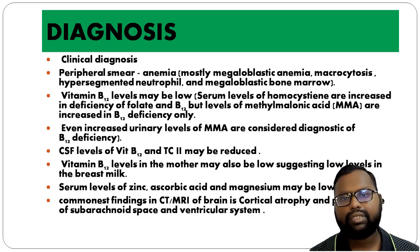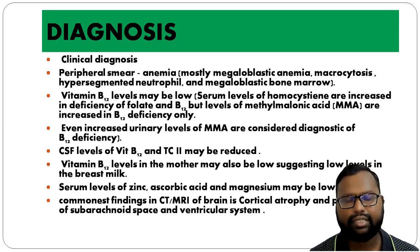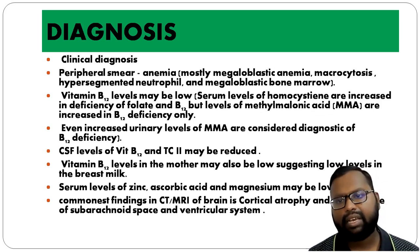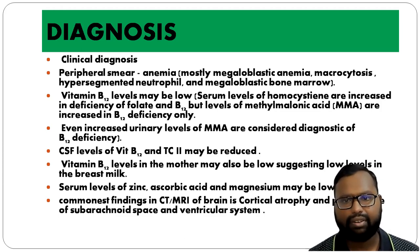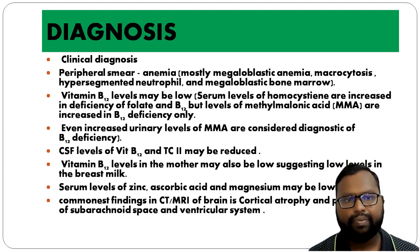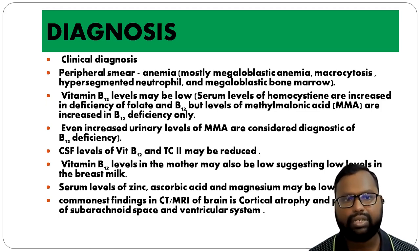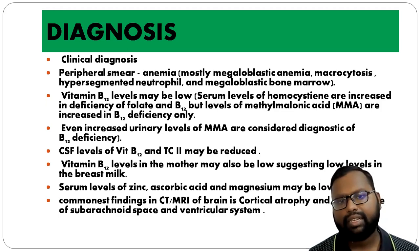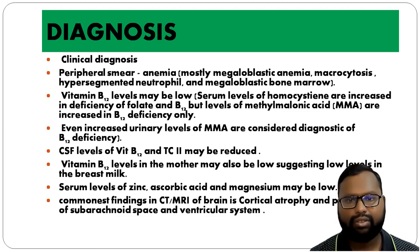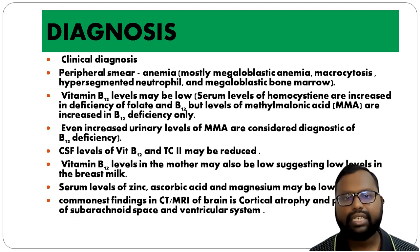There is no definite diagnostic criteria; the condition is diagnosed clinically with some lab-supportive evidence. Peripheral smear shows anemia, mostly megaloblastic or macrocytic anemia with hyperpigmented neutrophils. Bone marrow may show a megaloblastic picture. Vitamin B12 levels may be low, and urinary methylmalonic acid is increased — all suggesting B12 deficiency. CSF may show decreased B12 level and transcobalamin. Vitamin B12 in the mother may also be low, with decreased levels in breast milk as well. Serum zinc, ascorbic acid, and magnesium may also be found low in ITS.